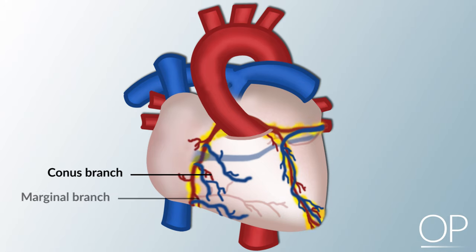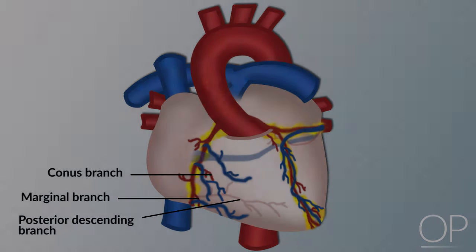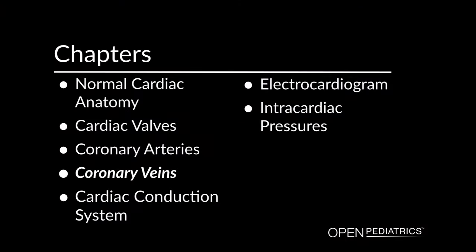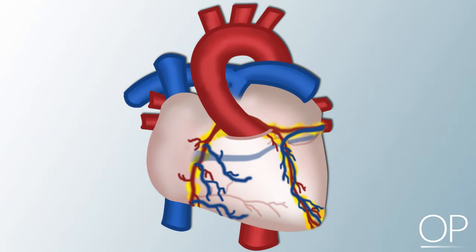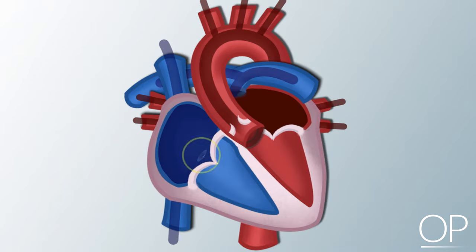The three major branches of the right coronary artery are the conus, the right marginal branch, and the posterior descending branch. After flowing through an extensive network of capillaries, blood from the coronary arteries drains into the cardiac veins. The veins flow into the great cardiac vein and coronary sinus. Blood empties from the coronary sinus into the right atrium.